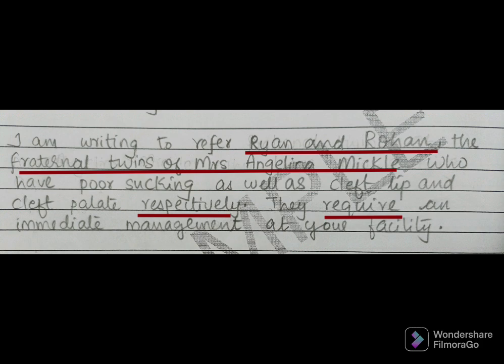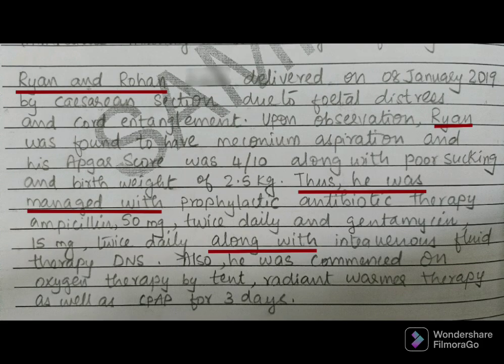Here we wrote both babies' names and indicated they are fraternal twins of Mrs. Angelina Michael, writing both disease conditions using the word 'respectively.' The use of 'respectively' allows correlation — Ryan has poor sucking and Rohan has cleft lip and cleft palate. That is the benefit of using the phrase 'respectively.' Both babies need immediate management at this facility. This concludes the introduction. In the present medical paragraph we need to make two paragraphs — one for Ryan and one for Rohan — so the reader will not get confused.